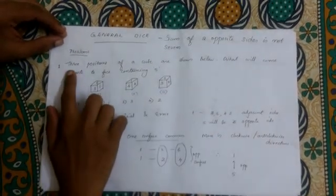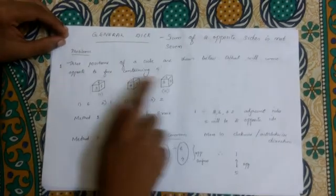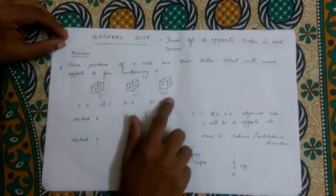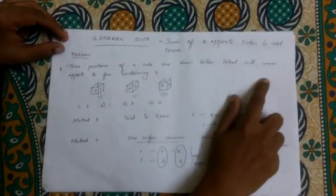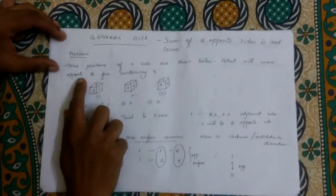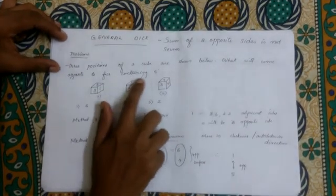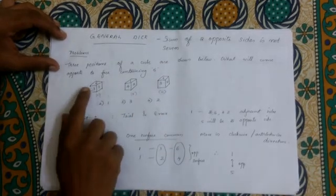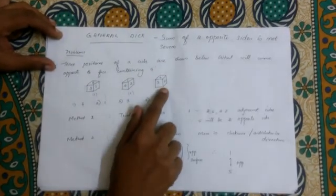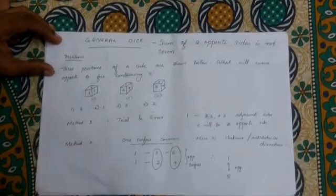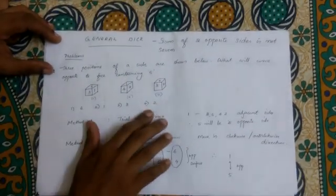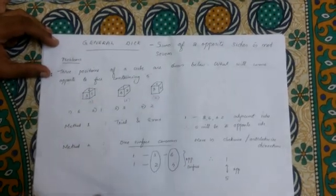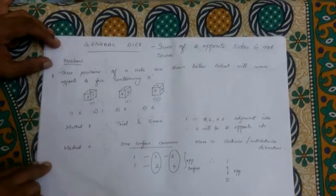First problem: Three positions of a cube are shown below. What will come opposite the face containing 5? We need to find what number is opposite to 5. I will show you two methods to solve this problem.